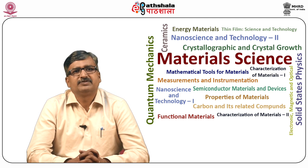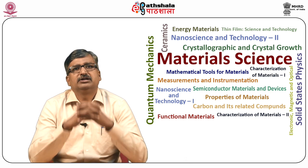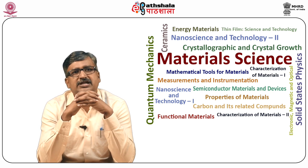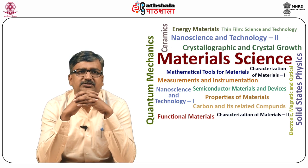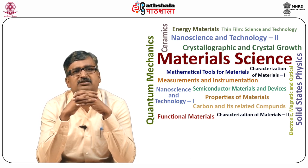Characteristic information of a sample using SEM includes: topography — the surface features of an object and how it looks, with a direct relation between these features and material properties; morphology — the shape and size of the particles making up the object; composition — the elements and compounds the object is composed of and their relative amounts; and crystallographic information — how the atoms are arranged in the object, each with direct relation to material properties.